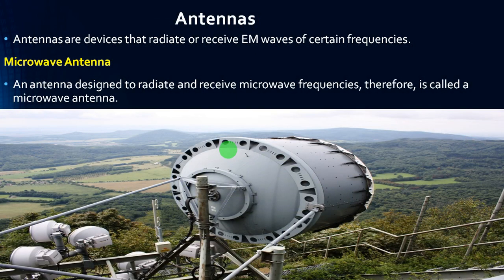Antennas are devices that radiate — that is, transmit or receive — electromagnetic waves of certain frequencies. A microwave antenna is an antenna designed to radiate and receive microwave frequencies. This is a microwave antenna installation picture. The black color cable indicates the waveguide. These are the microwave antennas with the radios. This is a 3-foot diameter microwave antenna, which means it supports very long distances.